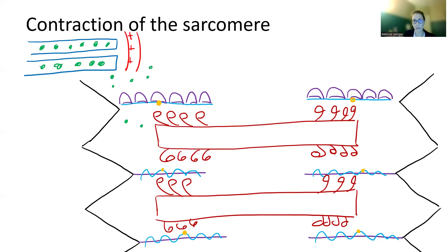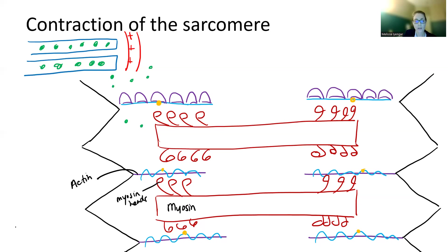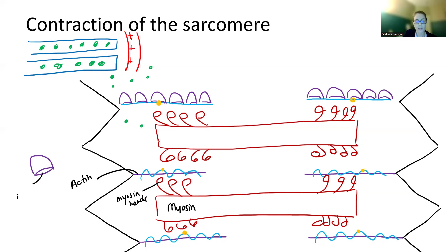We have our sarcomere here, and our sarcomere is our contractile unit. On the sarcomere, we have our thick filament and our thin filament. Our thick filament is myosin and we have our myosin heads. Our thin filament is going to be actin — these individual units — and underneath the actin it's going to have the myosin binding site.